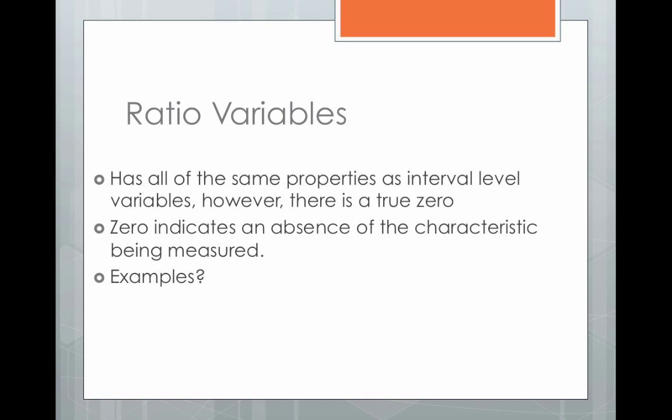For ratio variables, the variable has all the same properties as interval-level variables, but there is a true zero — and zero indicates an absence of the characteristic being measured. An example of a ratio-level variable is how many brothers and sisters do you have, because saying you have zero brothers and sisters means you have none. For this class, we're going to treat ratio and interval as the same, since you can do the same statistics with all numerical variables whether they're interval or ratio. But it's important to know the theoretical difference between the two.